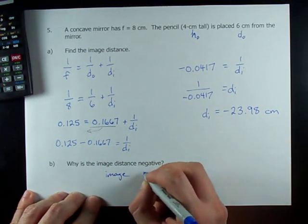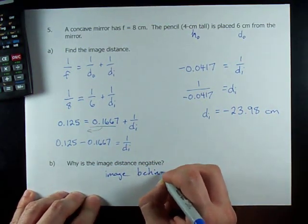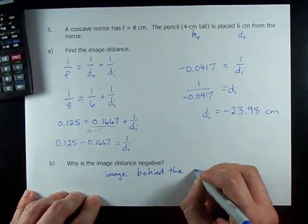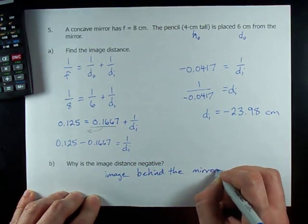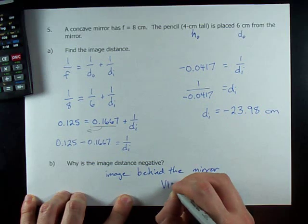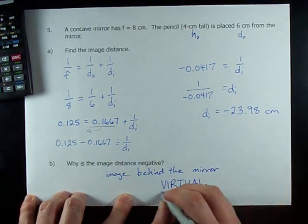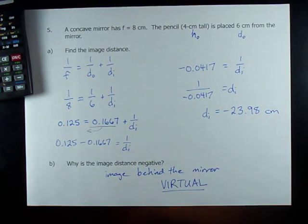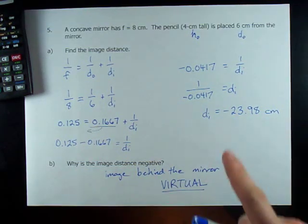What does it mean because the image distance is negative? Well, it means the image is behind the mirror, i.e., on the opposite side as the object, and that makes the image virtual. That's the definition of virtual image.